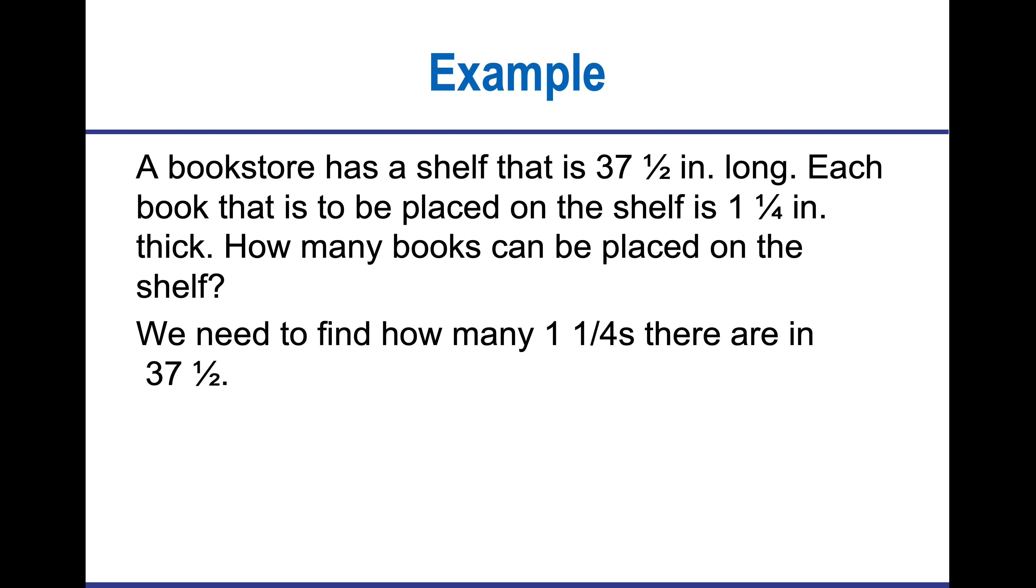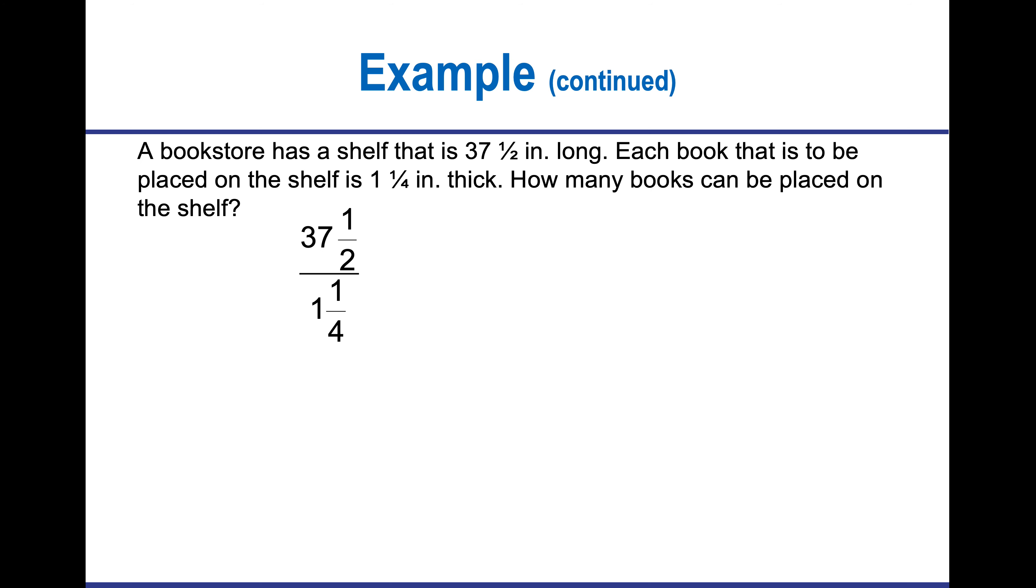Here's another example. I have a bookstore. It's got some shelves. I want to know how many books can be placed on the shelves. Well, we need to find out how many one and a quarters there are in that bookshelf length. In order to do this division, I'm going to convert them both to improper fractions. Once I have the division of the improper fractions, I'm going to flip the second fraction, multiply straight across so that I know 30 books can be placed on the shelf.